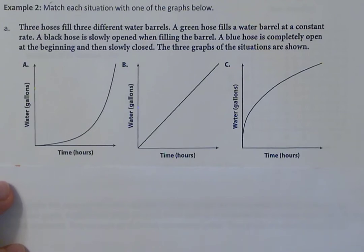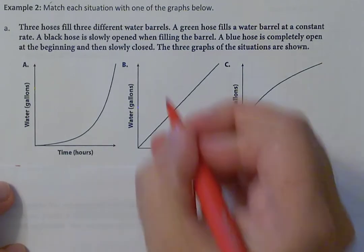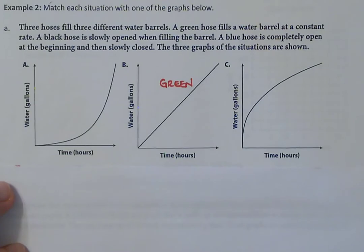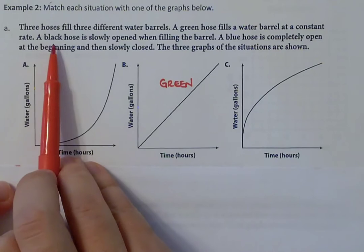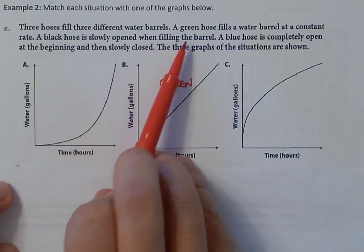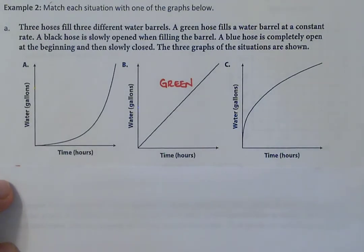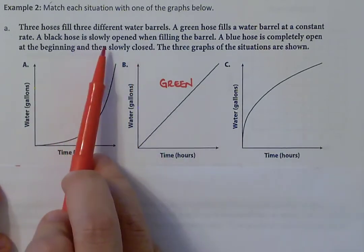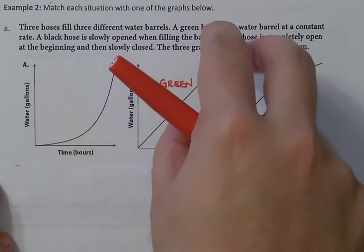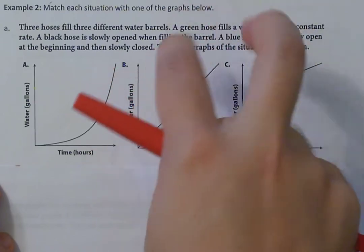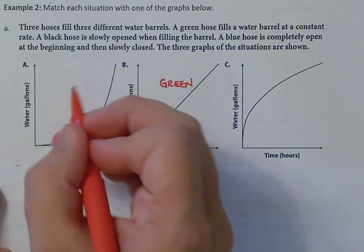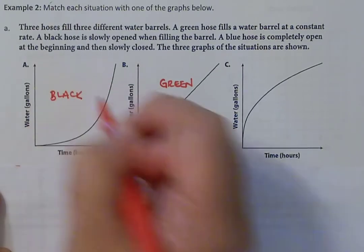The one filled at a constant steady rate would be Graph B, so B is our green hose. The black hose is slowly opened when filling the barrel — you slowly twist the valve, opening it more and more over time, so it fills faster and faster but starts out slow. That means Graph A is the black hose.